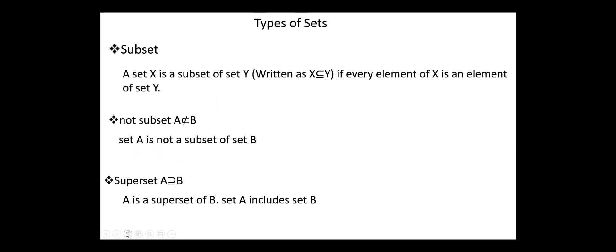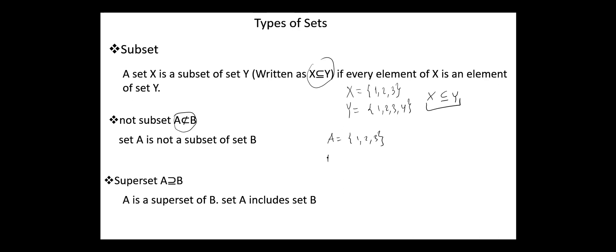Next, subset. A set X is a subset of set Y if every element of X is an element of set Y. For example, if X = {1, 2, 3} and Y = {1, 2, 3, 4}, then X is a subset of Y, since every element of X is an element of set Y. Not subset: set A is not a subset of B. For example, if A = {1, 2, 3} and B = {1, 4, 5, 6}, then A is not a subset of B. All the sets overlap — we have a common element between them — but other elements of A are not contained in B.